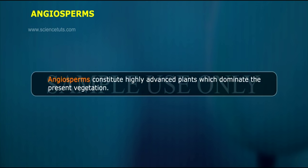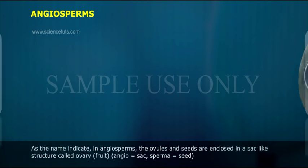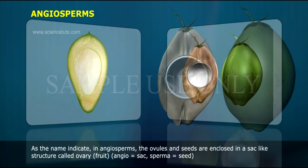Angiosperms constitute highly advanced plants which dominate the present vegetation. As the name indicates, in angiosperms, the ovules and seeds are enclosed in a sac-like structure called ovary, and the fruit. 'Angio' means sac and 'sperma' means seed.